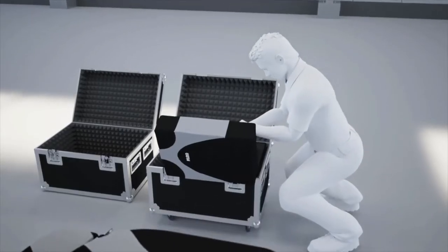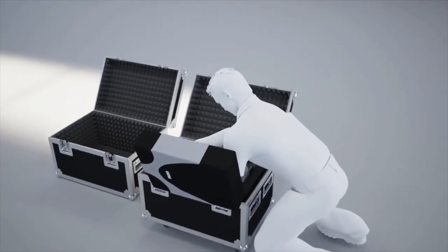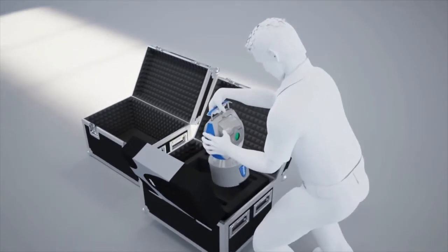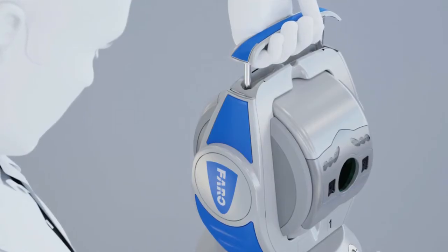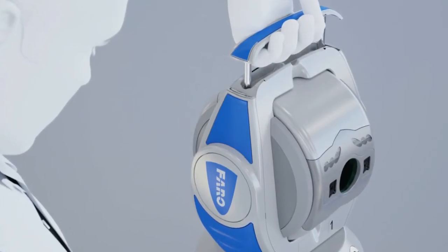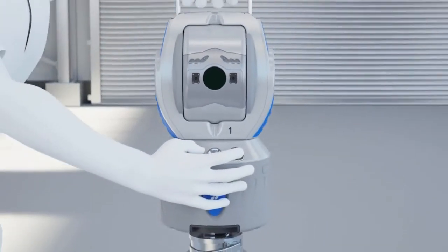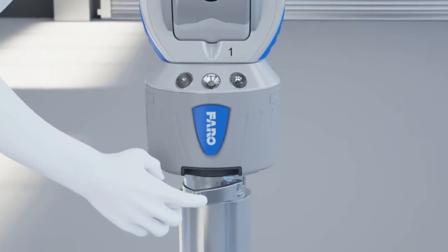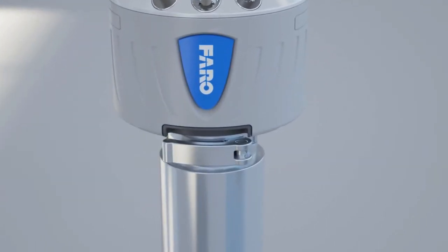Now remove the laser tracker from the Faro Trolley. The extendable handle lets you comfortably transport the laser tracker to your tripod. Carefully place the laser tracker onto the quick mount attached to the tripod, then close the exterior fixing lever.